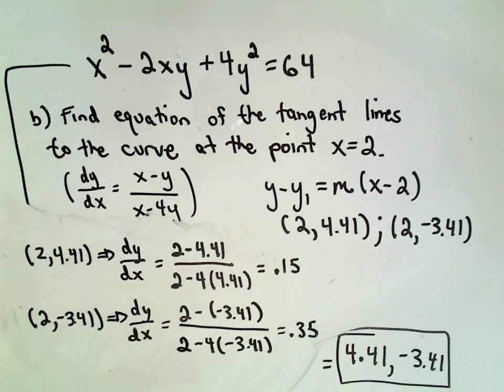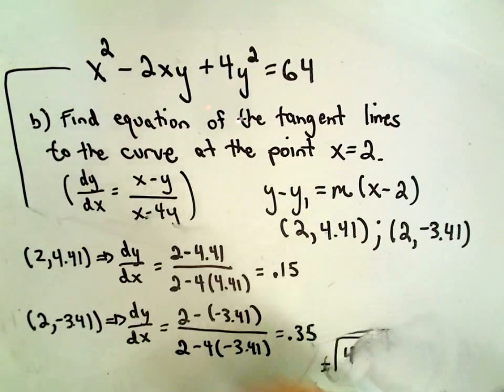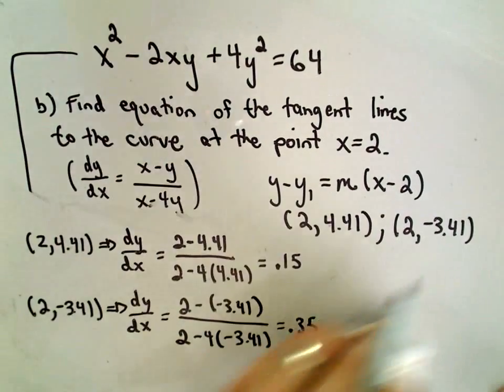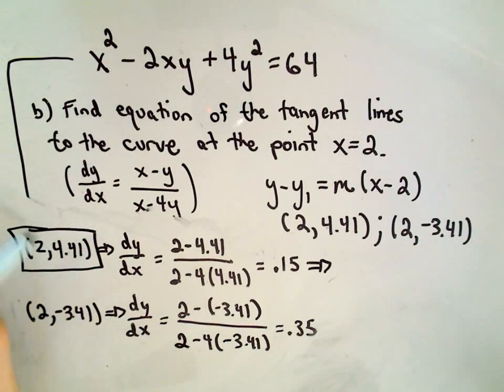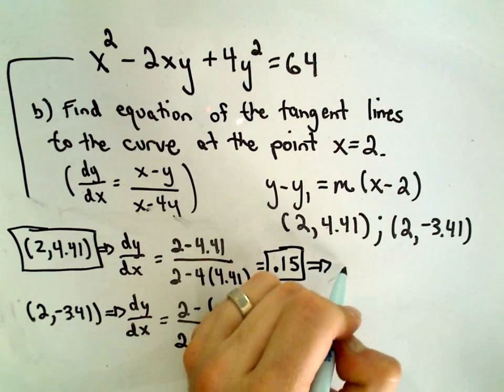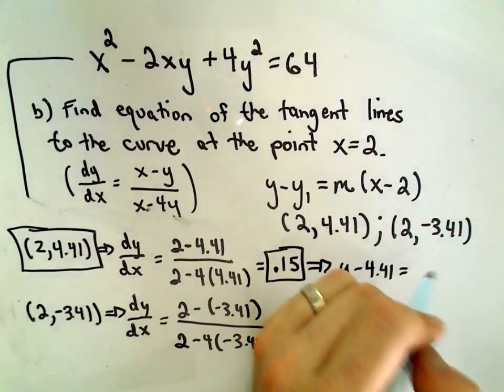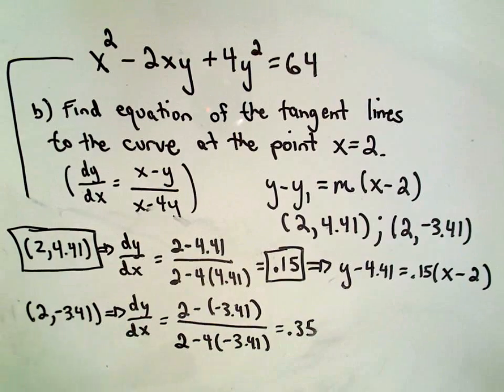So the last thing we need are the equations of our tangent lines. So I think we're just about there. Okay, so it says basically the tangent line that goes with this point. Okay, so we're using this point, 2 comma 4.41. We're using this as our slope, 0.15. So it says the equation will be y minus the y coordinate, 4.41, equals the slope, 0.15, x minus the x coordinate, which is 2.